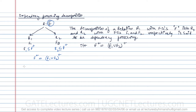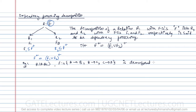For example, assume we have a relation R(A, B, C) with functional dependencies: A→B, B→C, and C→A. This relation is decomposed into two relations: R1(A, B) and R2(B, C).